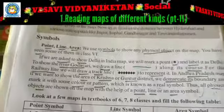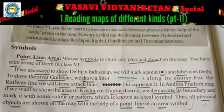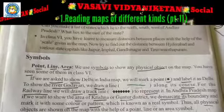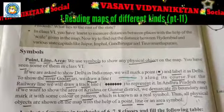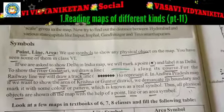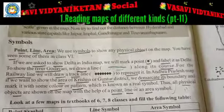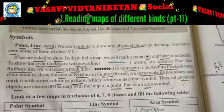So next: symbols — point, line, area. We use symbols to show any physical object on the map. You have seen some of them in class 6th. If you are asked to show Delhi in the India map, we will mark a point and label it as Delhi. To show the river Godavari, we draw a line along its course. For the railway line, we will draw a track line to represent it. To represent an area in an Andhra Pradesh map, if you want to show the area of Krishna or Guntur district, we demarcate its boundary and mark it with some colour or pattern, which is known as an area symbol. Thus all physical objects are shown on the map with the help of a point, line, or an area symbol.